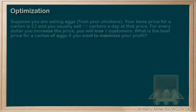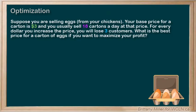Let's go over one more example. Suppose you are now selling the eggs from your chickens. Your base price for a carton of eggs is $3, and you usually sell 18 cartons a day at that price. You've experimented with raising and lowering the price in the past, and your data shows that for every dollar you increase the price, you lose three customers. So what is the best price for a carton of eggs if you want to maximize your profit?